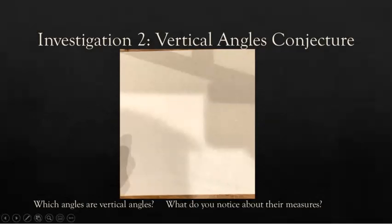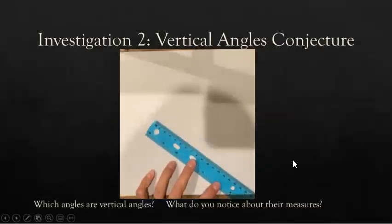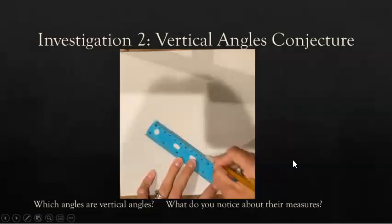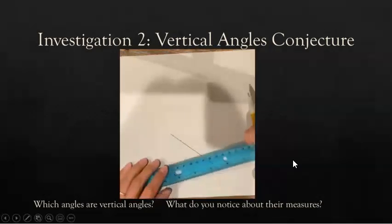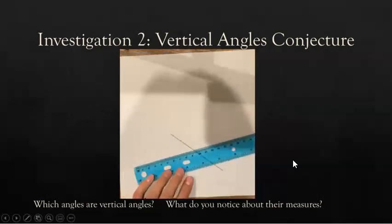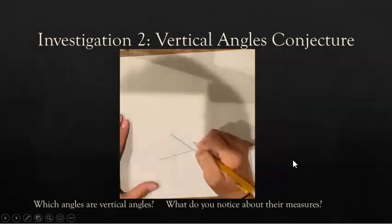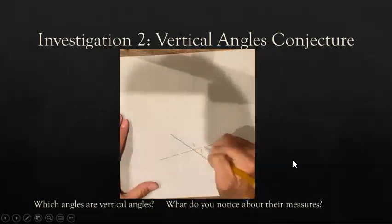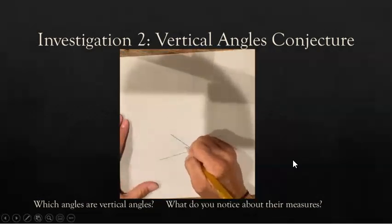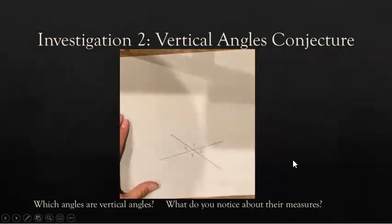Investigation two is the vertical angles conjecture. For this one, you want to use paper that you'll be able to see through a little bit. Draw two intersecting lines onto patty paper or tracing paper and label the angles as shown: one, two, three, four. Which ones are vertical angles? Two and four, and one and three. Remember our definitions are that vertical angles are across from each other using the same lines.